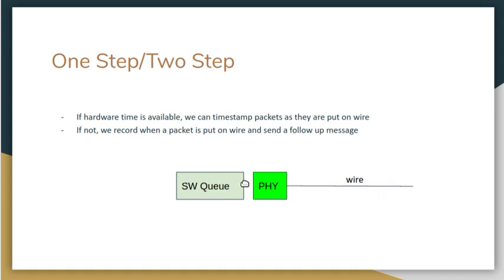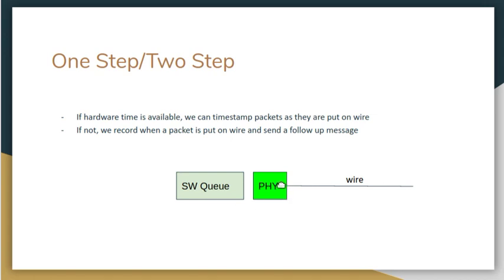To reiterate one-step vs. two-step: when a timestamp is sent over the wire, it goes through a software queue, then reaches the hardware PHY, and goes out on the wire. If you timestamped in software, there may be milliseconds of delay, causing the other side to think that was the time the packet hit the wire when it wasn't. In one-step, sophisticated physical layer hardware timestamps the packet as it exits onto the wire. Without that, you send the packet, record the time it passed the PHY, and in the subsequent follow-on message report the actual wire delivery time — that is two-step.